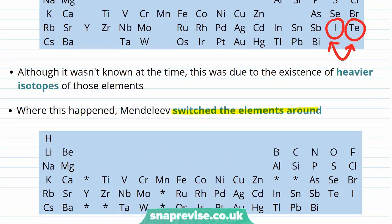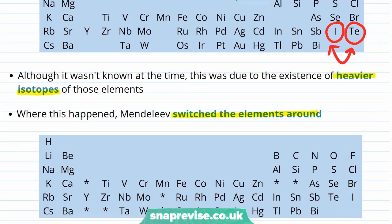Although he didn't know it at the time, because neutrons hadn't been discovered, the appearance of some elements in the wrong order when ordering by mass was due to the existence of heavier isotopes of those elements. Switching these elements around allowed the columns to be kept as a consistent set of elements with similar chemical properties.